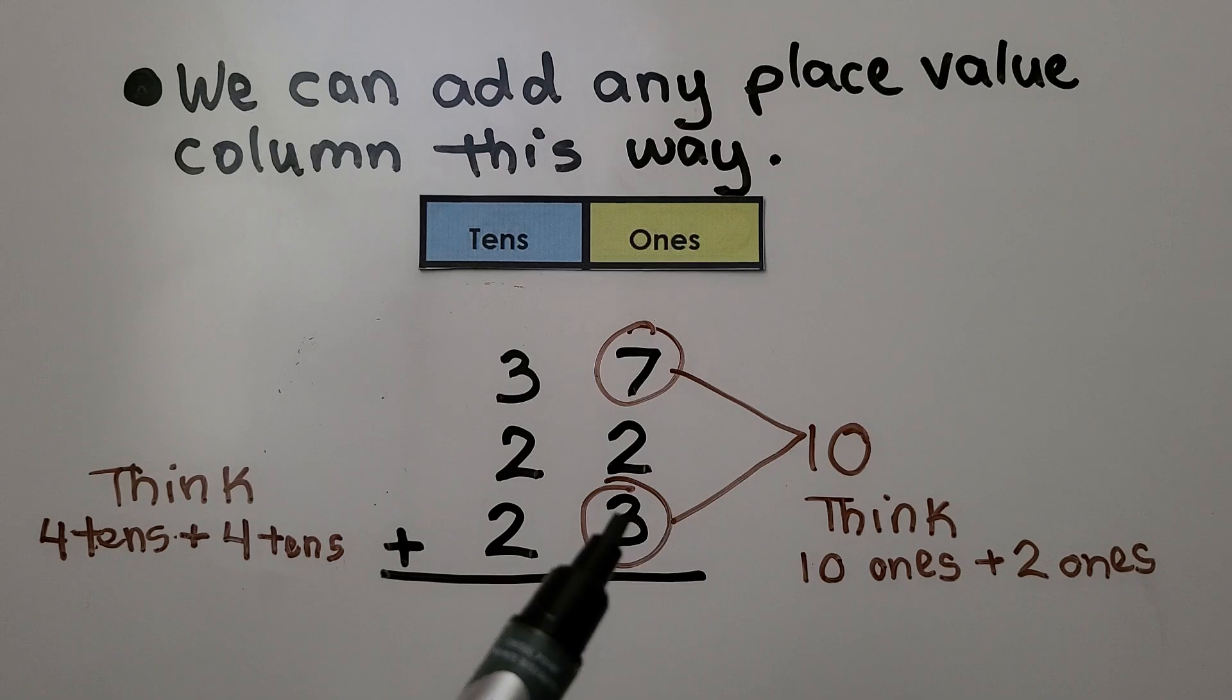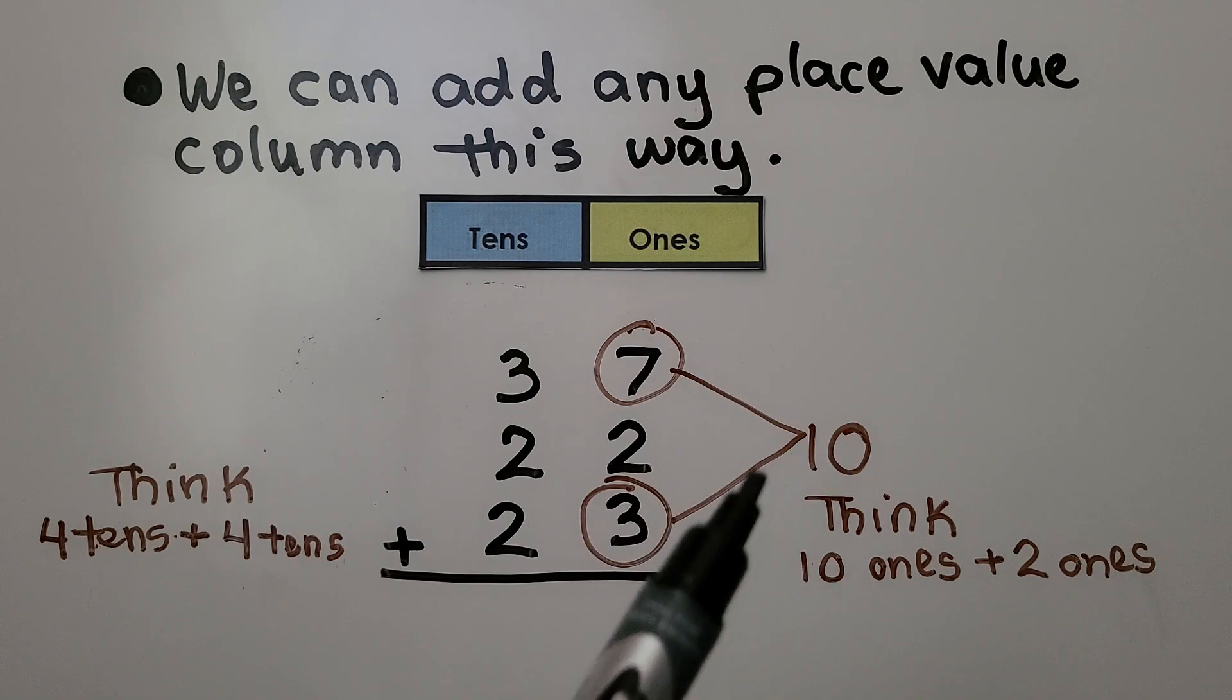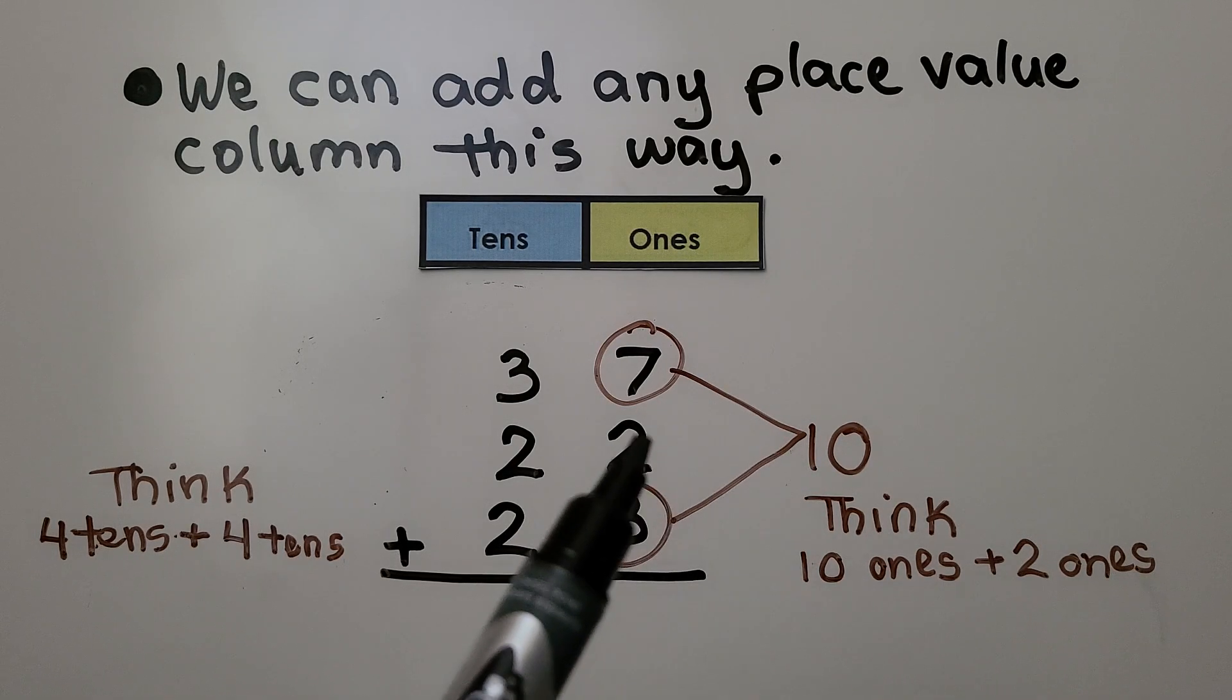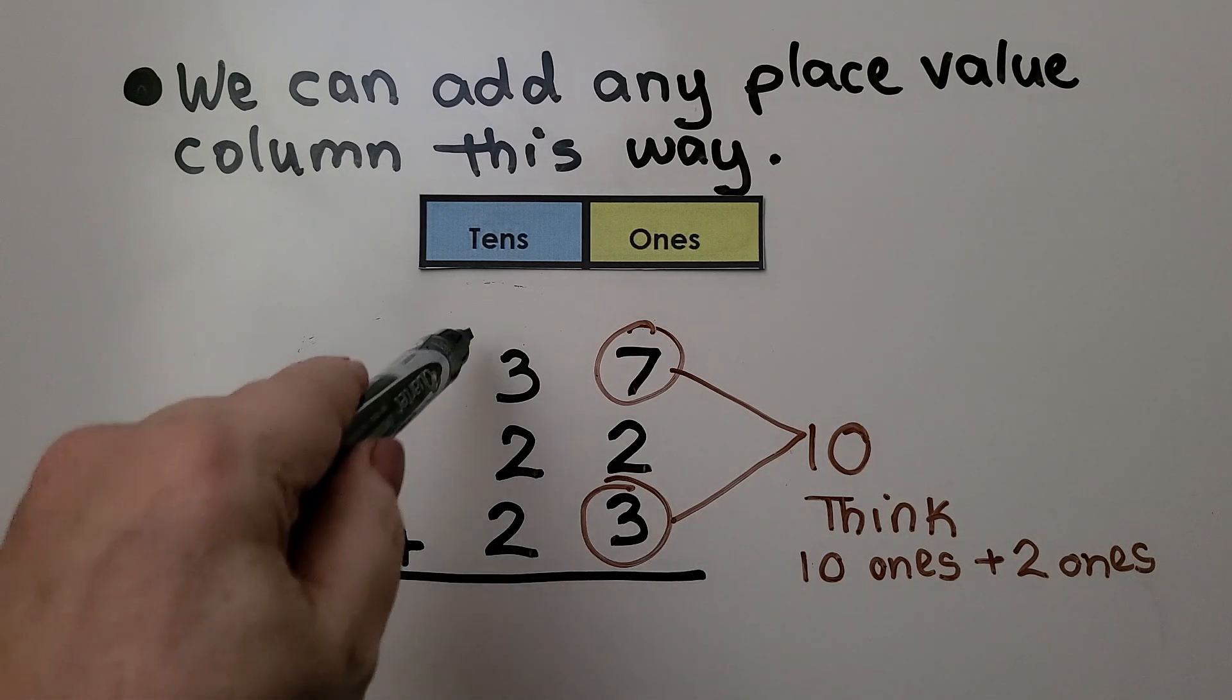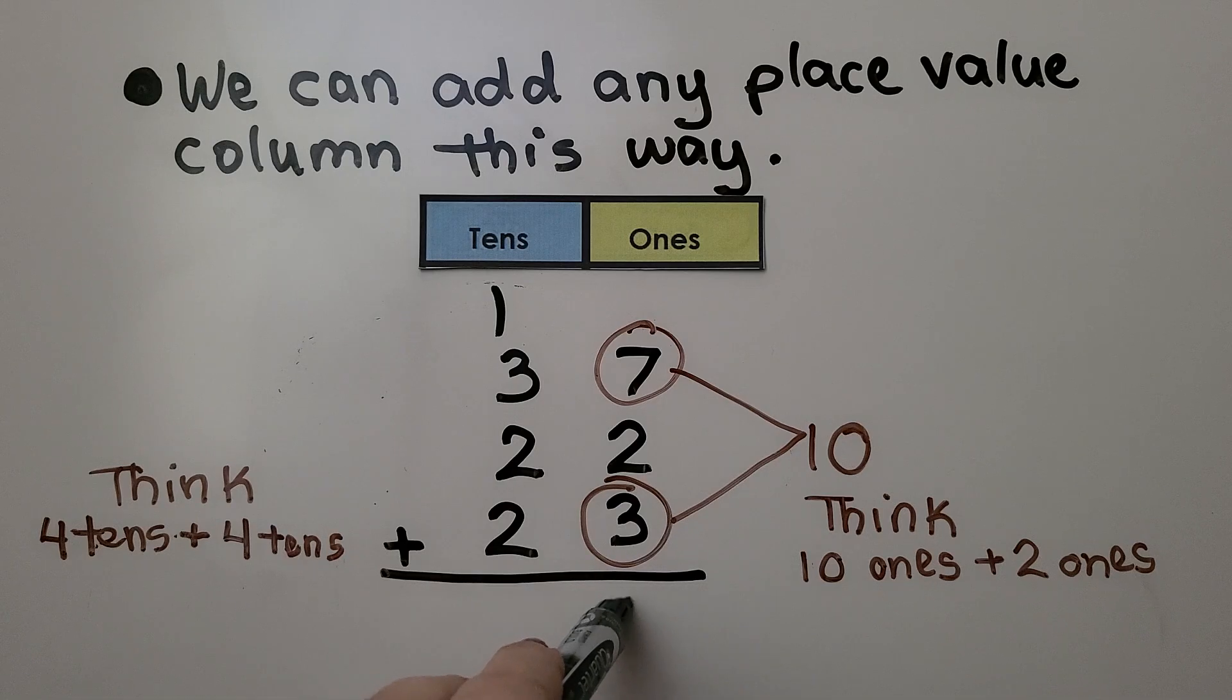I see a 7 and a 3. 7 plus 3 is 10. We think 10 plus 2, 10 ones plus 2 ones. That's 12 ones. That's 1 ten, 2 ones.